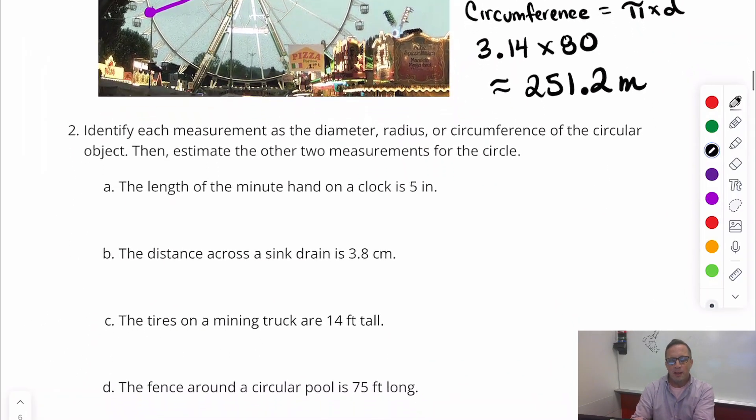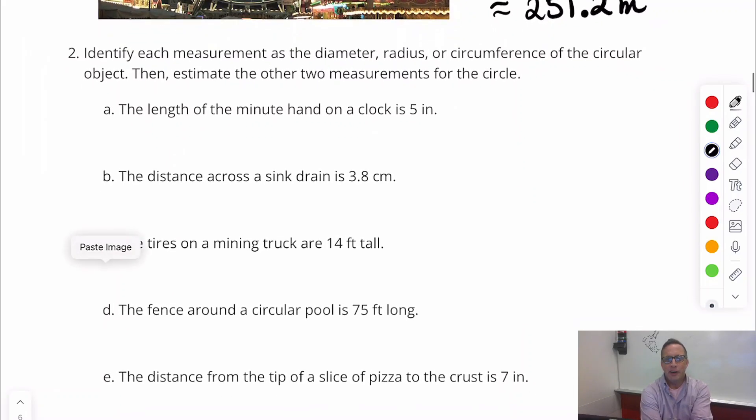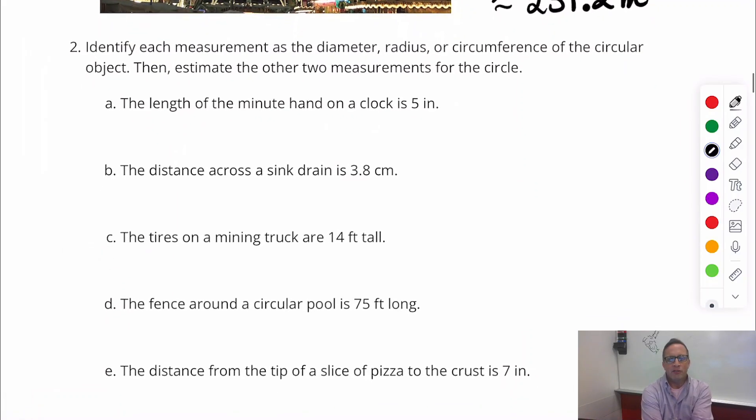All right. Number two. Identify each measurement as the diameter, radius, or circumference of a circular object. Then estimate the other two measurements for the circle.